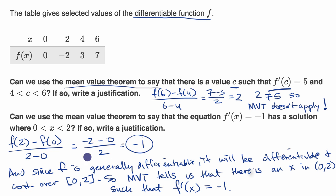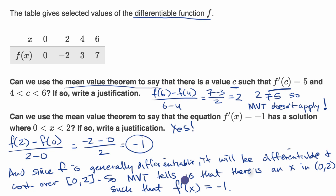Yes, and this is the justification: the slope of the secant line, or average rate of change, equals negative one. Since f is generally differentiable, it will be differentiable and continuous over the closed interval. So the mean value theorem tells us that there is an x in this interval such that f prime of x is equal to negative one. And we're done.